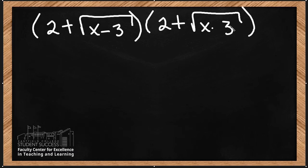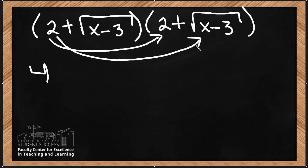You treat it as regular FOIL, so you do your first term: 2 times 2 is going to give you 4. And then I'm going to do 2 times the square root of x minus 3, and I'm going to get 2 root x minus 3.